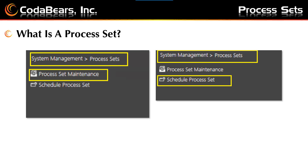So what is a process set? Think of a process set as a group of tasks or processes that you want to schedule to run together, either one after the other or simultaneously. You can order the tasks to run in a certain sequence or you can choose to allow simultaneous running of the tasks so they all run at the same time. You may be familiar with running scheduled tasks, but instead you will schedule your process set by using the schedule process set menu item. So rather than scheduling each individual task, you will set up each task to be added to a process set and then schedule that process set.